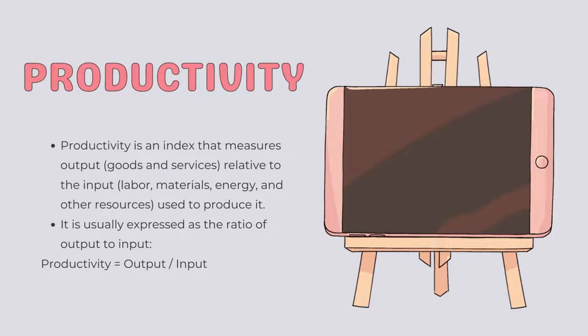Productivity is an index that measures output — such as goods and services — relative to the input, such as labor, materials, energy, and other resources used to produce it. It is usually expressed as the ratio of output to input, so productivity equals output over input. Productivity is the state of being able to create, particularly at high quality and quick speed. An example is how quickly a toy factory is able to produce toys.